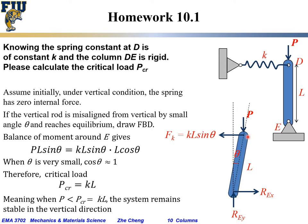KL sine theta times the distance L cosine theta gives the counterclockwise moment. Since theta is very small, sine theta approaches theta and cosine theta approaches 1. The equation simplifies: L and L cancel, sine theta and sine theta cancel, giving the critical load TCL equals K times L times cosine theta, and since cosine theta approaches 1, PCR equals KL. When the applied load is smaller than KL, the system remains stable in the vertical direction.